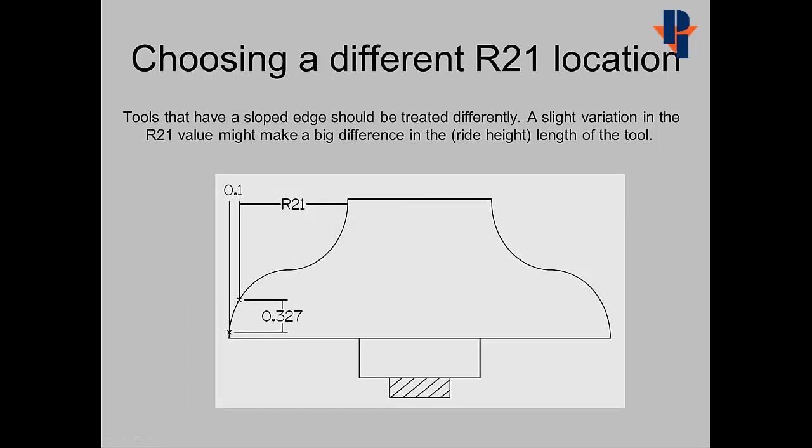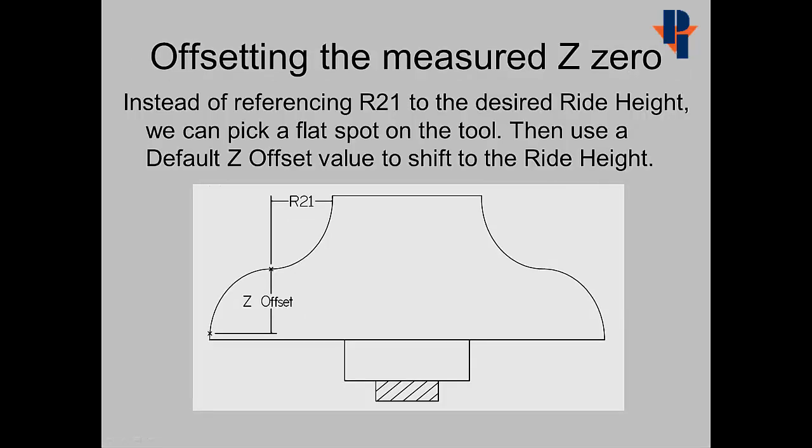Some tools may require choosing a different R21 location. Tools that have a sloped edge should be treated differently. A slight variation in the R21 value might make a big difference in the ride height of the tool. As shown on the picture, a 0.1 difference in the R21 might change the height of the tool by 0.327. Instead of referencing the R21 to the desired ride height, we can pick a flat spot on the tool, and then use a default Z offset to shift the ride height to our desired location.